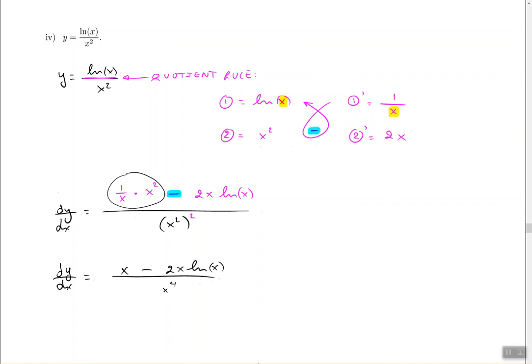So a couple of things I did here: one over x times x squared, that's the same thing as x squared over one, so that's pretty much x squared over x, which simplifies back to x. The other thing I did was x squared squared—I said that is going to be x to the power four, because when the base is raised to a power and raised to a power again, you're expected to multiply the powers.